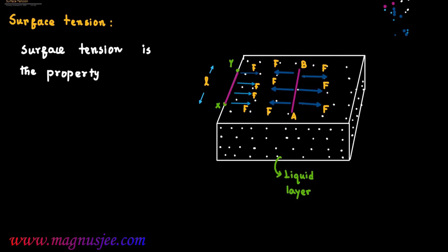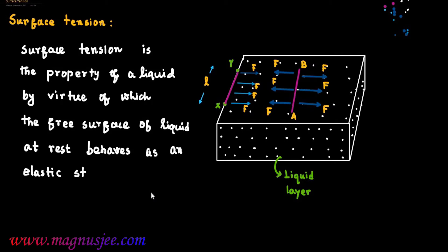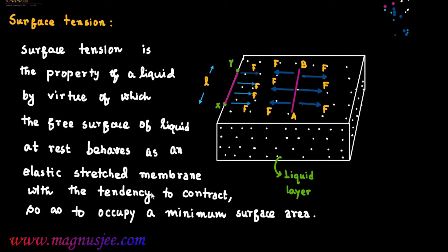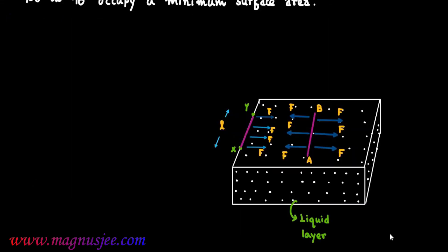Surface tension is the property of a liquid by virtue of which the free surface of liquid at rest behaves as an elastic stretched membrane, with the tendency to contract so as to occupy a minimum surface area. This is the free surface of liquid which has a tendency to occupy minimum surface area due to surface tension.